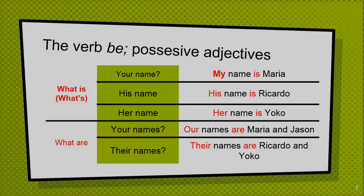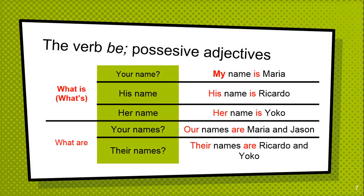It's a verb 'to be'. What's his name? His name is Ricardo. 'His' is a possessive adjective, and 'is' is the verb 'to be'. Her name is Yoko. 'Her' is a possessive adjective, and 'is' is the verb 'to be'.